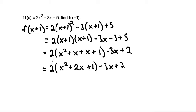Then we can distribute our 2 to every term in the parenthesis. So 2 times x squared is 2x squared, 2 times 2x is plus 4x, 2 times 1 is 2. And bring down our minus 3x and our plus 2.